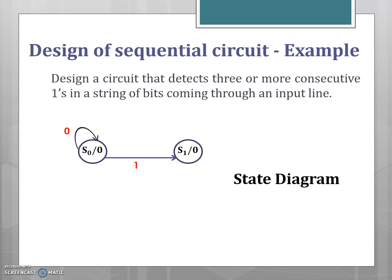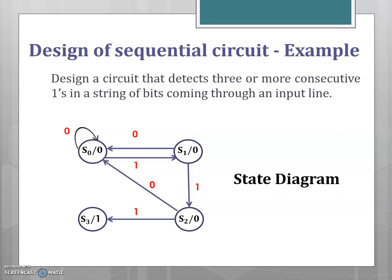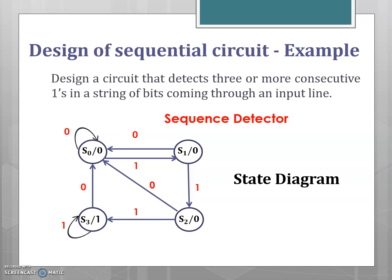For an input of 0, the circuit goes back to the initial state S0. If a next one is detected, the circuit goes to state S3 with output 1, indicating that three consecutive ones are detected. For any 0 input, the circuit goes back to state S0. If more ones are detected, the circuit remains in state S3 with output 1, and if the input is 0, it returns to the initial state S0. This is the state diagram for the given sequential circuit.